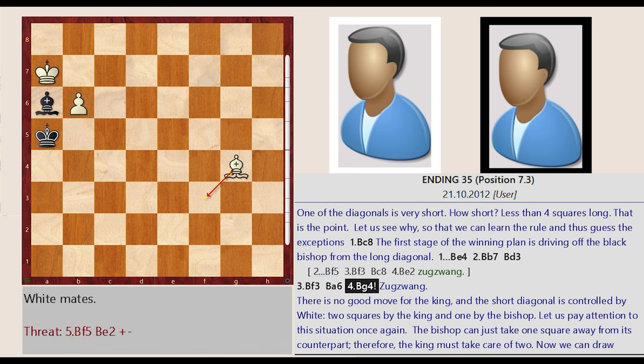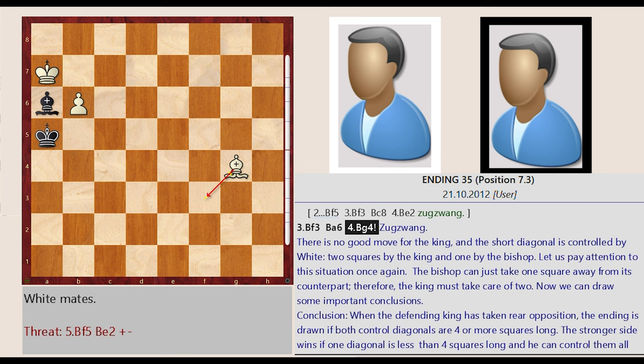There is no good move for the king, and the short diagonal is controlled by White, two squares by the king and one by the bishop. Let us pay attention to this situation once again. The bishop can just take one square away from its counterpart, therefore, the king must take care of two. Now we can draw some important conclusions.